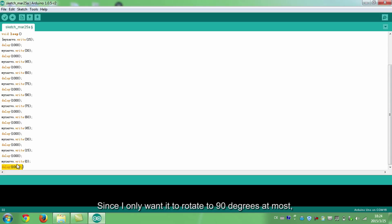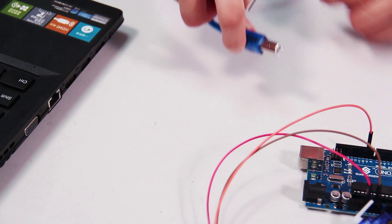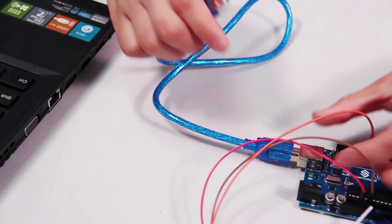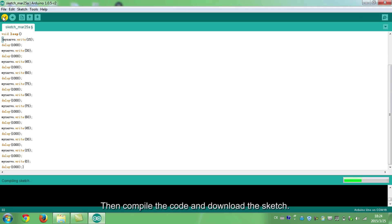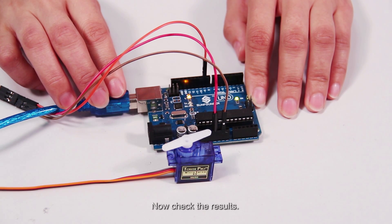Since I only want it to rotate to 90 degrees at most, I set it so. You can change it as you like. You can set it like 135 degrees, 180 degrees, or other angle as you want, within the range of 0 to 180 degrees. Then compile the code and download the sketch. Now check the results.